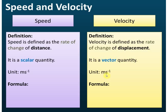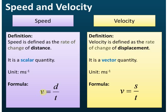The formula for speed: speed is the rate of change of distance, so mathematically we write it as distance divided by time. V is the symbol for speed, so speed equals distance divided by time. For velocity, the formula is v equals s over t. Note that speed and velocity share the same symbol, v. D is used for distance and s is used for displacement.